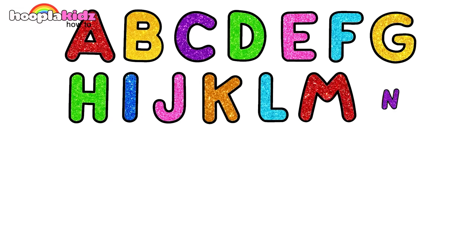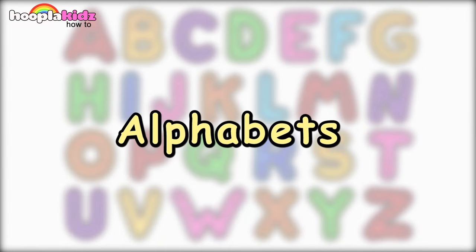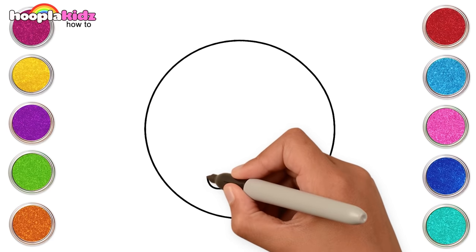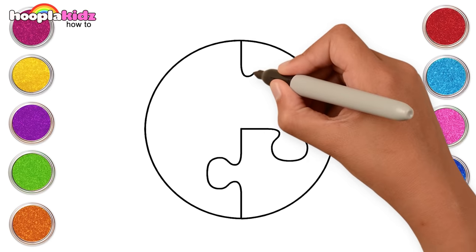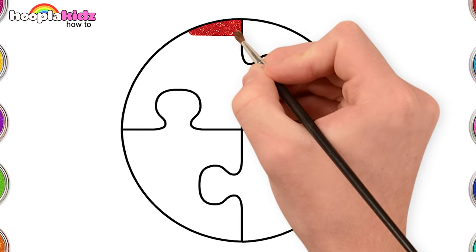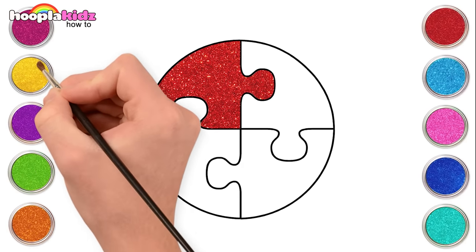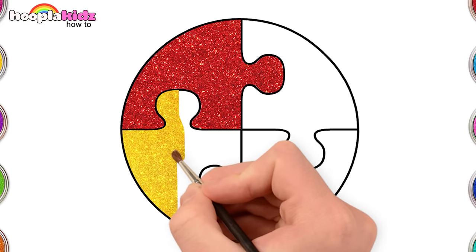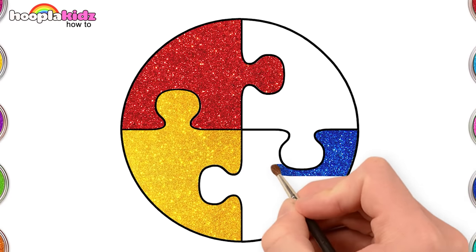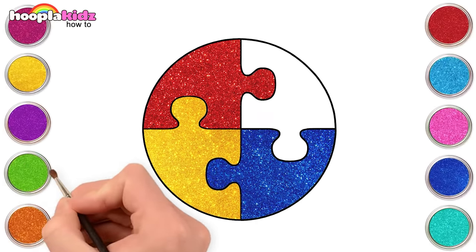Hi kids, let's make puzzles in different shapes. Let's begin with a puzzle in a circle. Make four puzzles inside, that's easy isn't it? Let's paint it. Let's use colors like red, yellow, dark blue, and green.